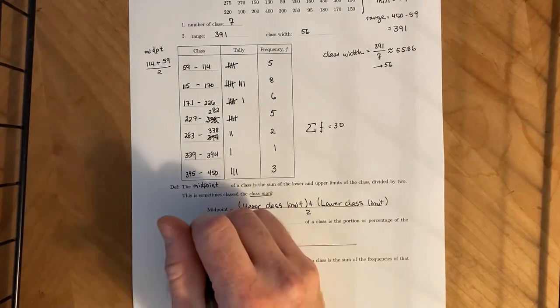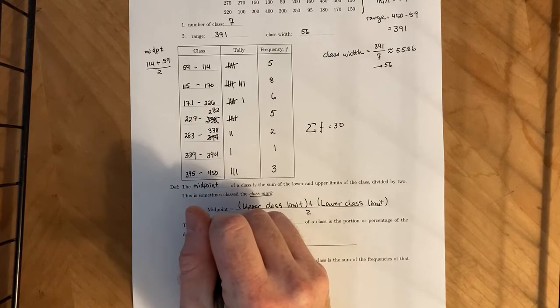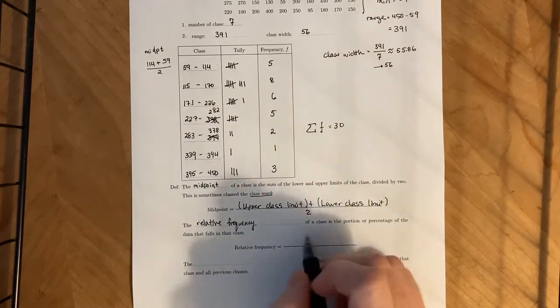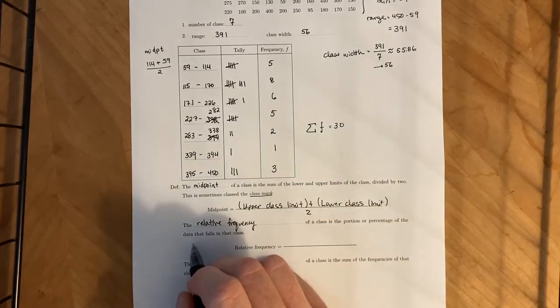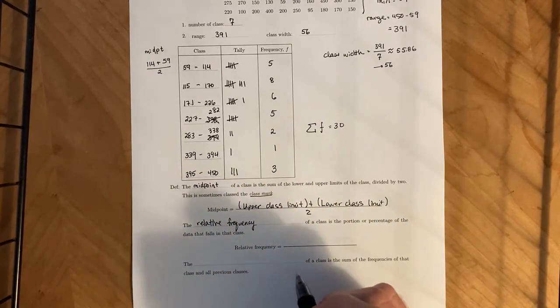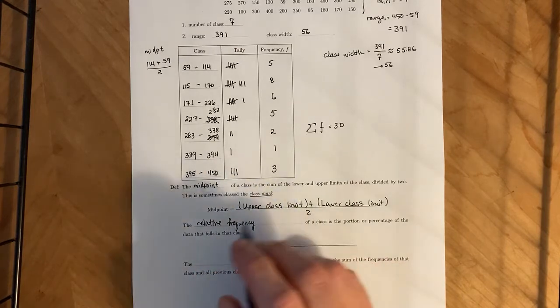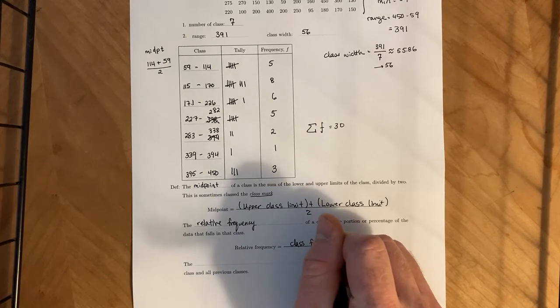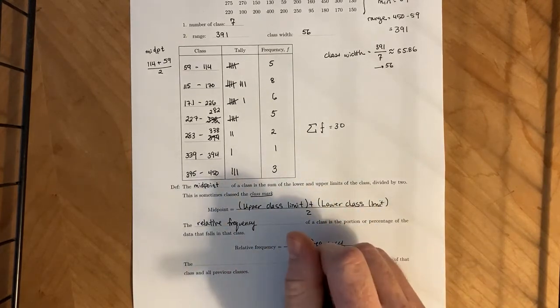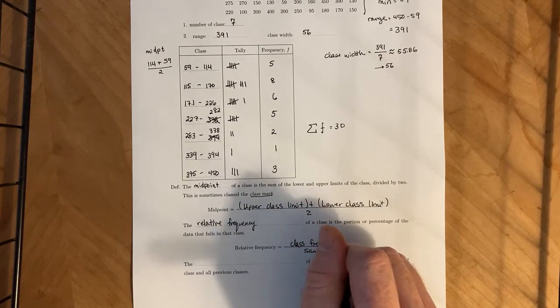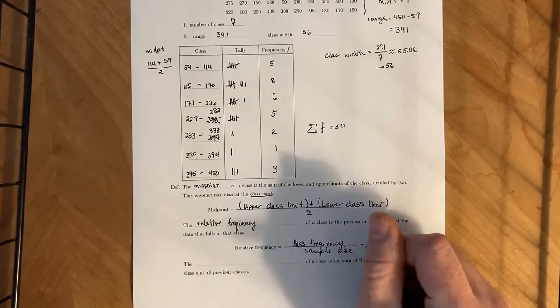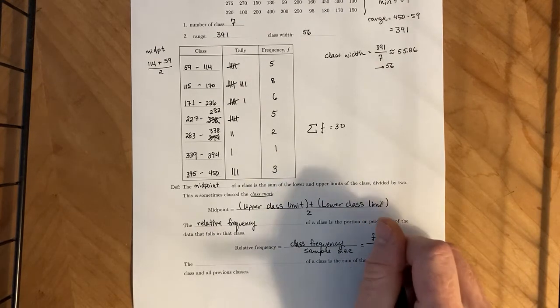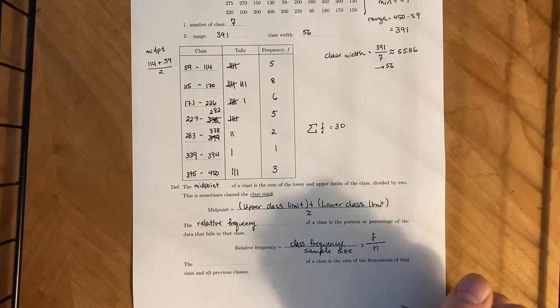Next, we can talk about what is called the relative frequency. The relative frequency of a class is the portion or percentage of the data that falls in that class. So to figure out the relative frequency, we take the class frequency and divide it by the sample size. So in symbols, that is the class frequency F divided by the total number of samples N.